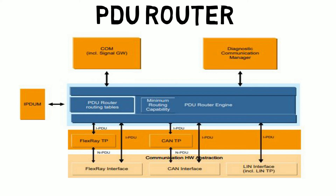The PDU routing table will be configured in the VSW stack configuration. The second part is the PDU router engine. It is the actual C code generated, which will be used to transmit the signals to a particular interface. This is actually done by the stack vendor — for example, Vector or some other vendor will do this.